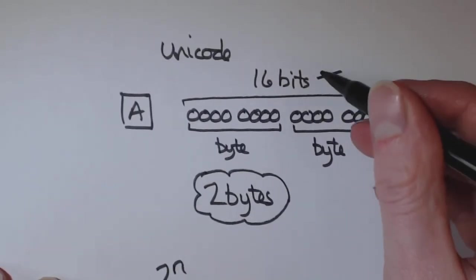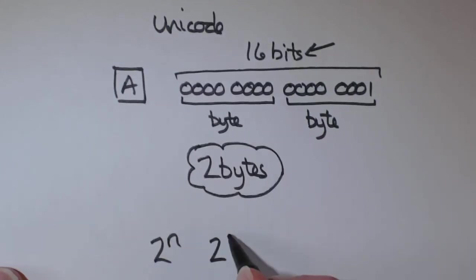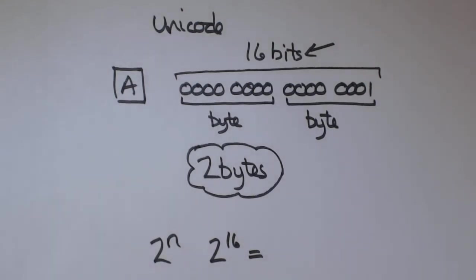You've got 16 bits here. So that's 2 to the power of 16. And that equals, get this in the calculator.